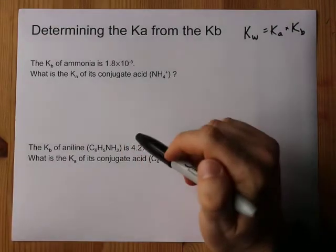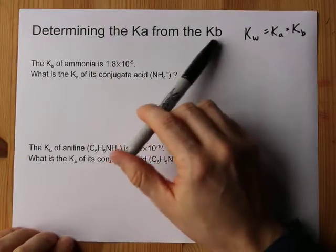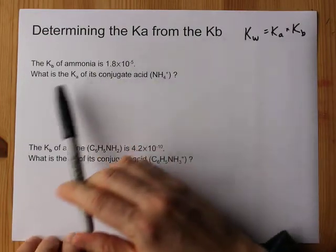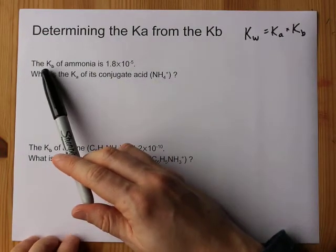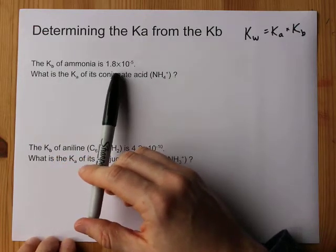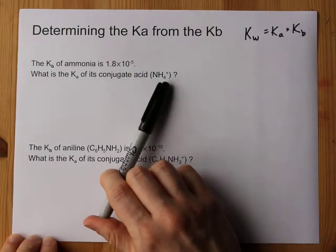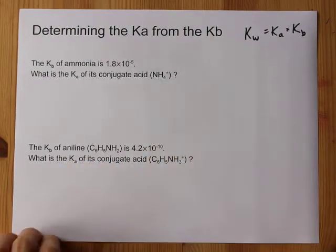It's your boy Chemist Nate coming at you with another banger: determining the Ka from the Kb. You are given the Kb or the base dissociation constant for a weak base. How do you figure out the acid dissociation constant for its conjugate, i.e. the same thing but with an extra H?